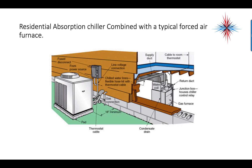This is a picture of a residential absorption system combined with a typical forced-air furnace. Basically, a water cooler is placed on top — instead of a DX coil, we have a water cooler. The reason these systems are used more and more is because it doesn't take a lot of power to operate.